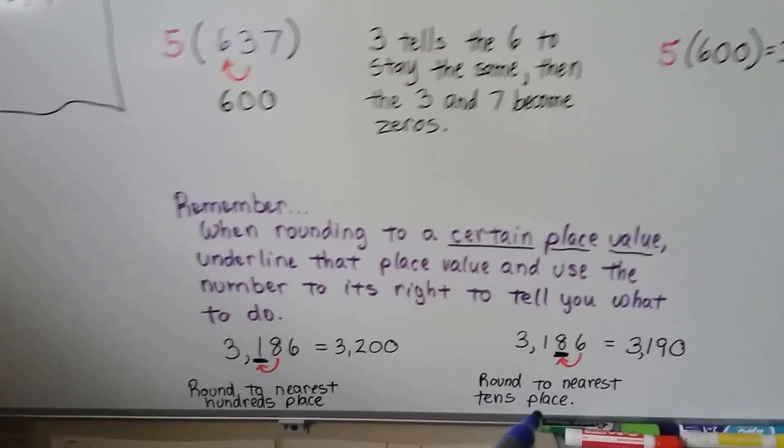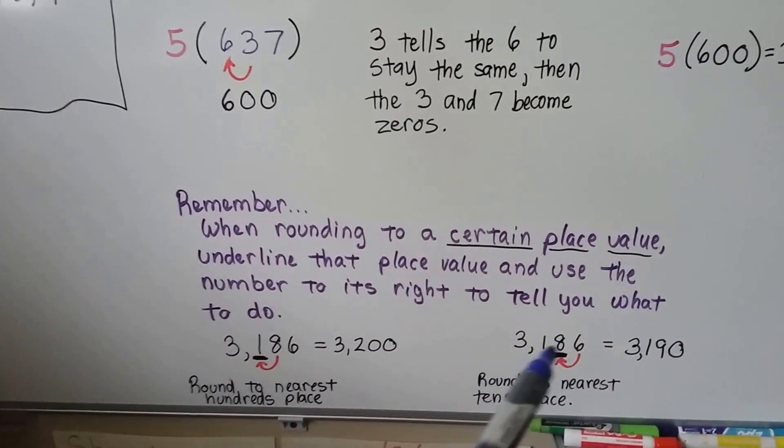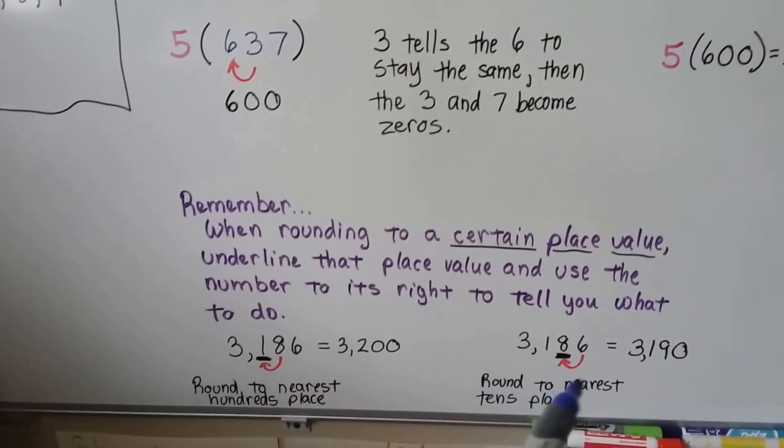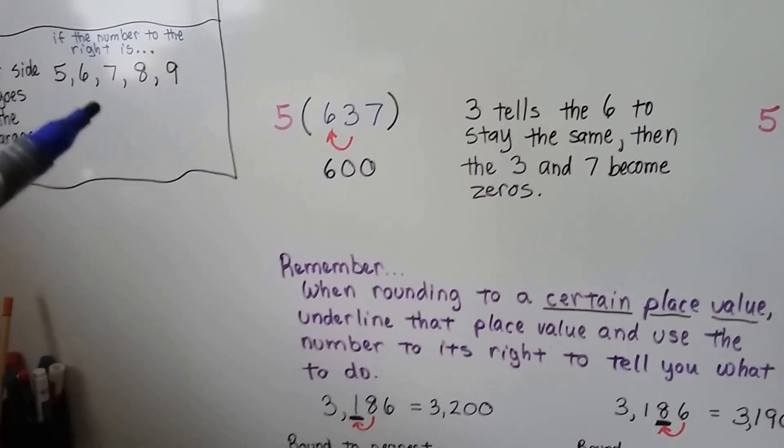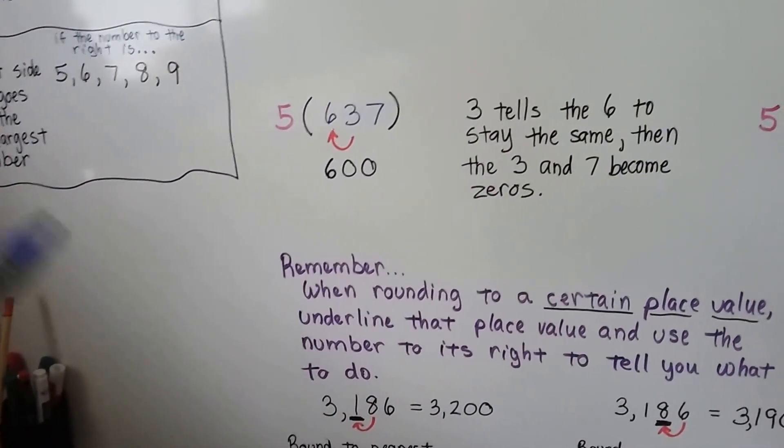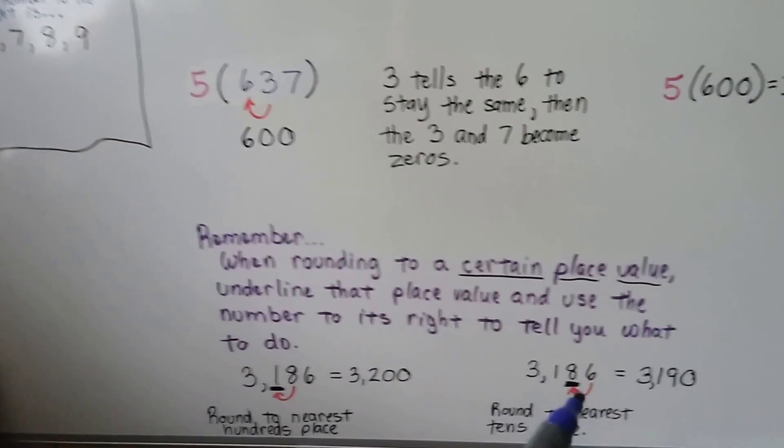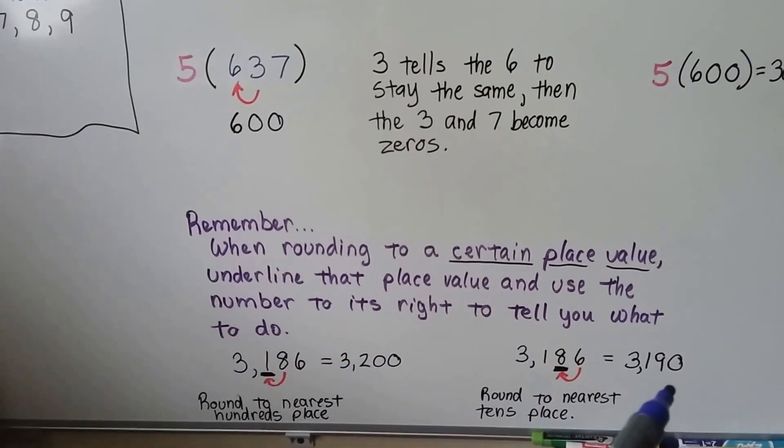If we're rounding to the tens place, same number, but now we're going to underline the tens place, that 8. Now the 6 is telling the 8 what to do. And because 6 falls in the 5, 6, 7, 8, or 9, it's going to tell that left number to go up to the next largest number. We end up with 3,190.